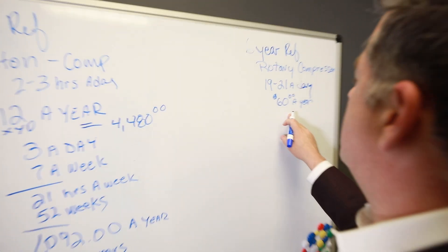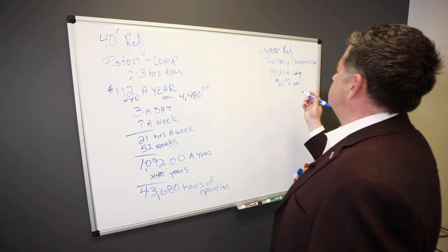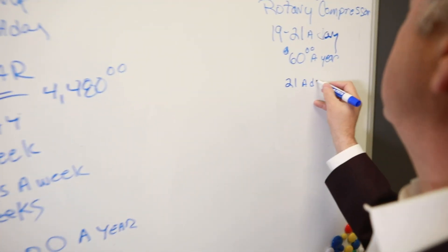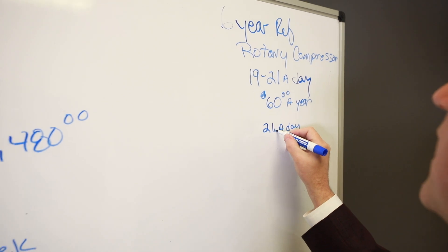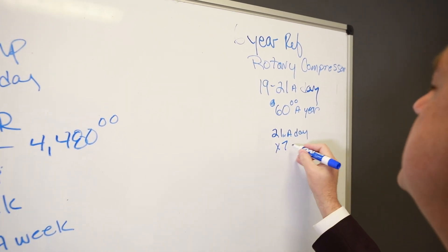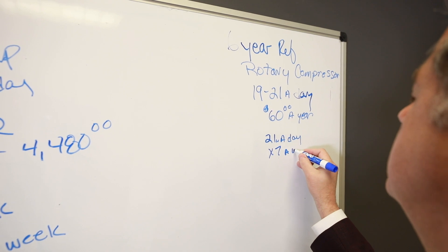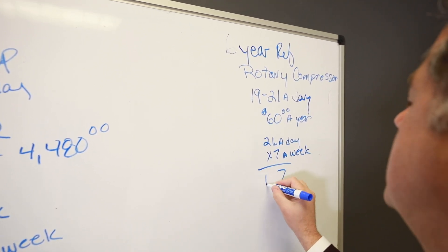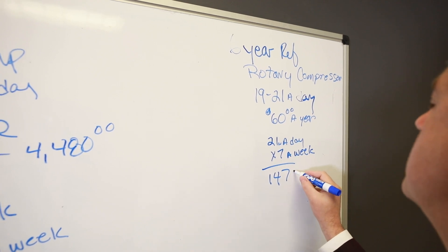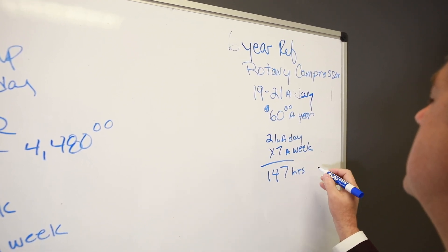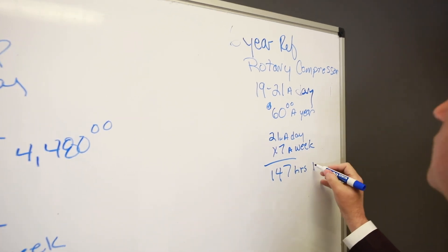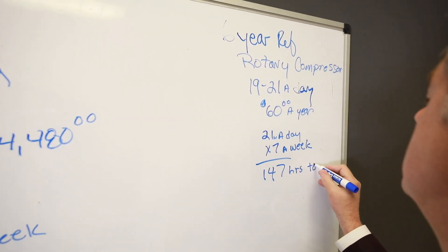So now let's go through. So if that's operating 21 hours a day, times seven days a week, it's 147 hours during the week, total weekly.